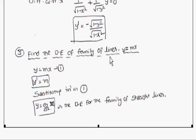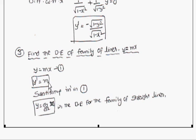Find the differential equation of the family of lines y = mx. He calls it a family of lines because if the slope m varies, you automatically get a different number of lines. Consider y = mx; differentiating gives y′ = m. We have to remove the arbitrary constant m. Substituting m = y′ back into y = mx gives y = (dy/dx)·x, which is the differential equation of the family of straight lines.